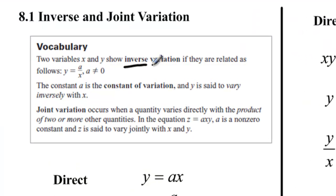When we talk about inverse variation, which you can see right here, we say that two variables show inverse variation if they're related as follows: y equals a over x where a is not equal to zero and a is the constant of variation. Joint variation is when you have multiple variables, two or more variables being multiplied together, like z equals a times x times y. a again is a non-zero constant and z is said to be varying jointly with x and y.